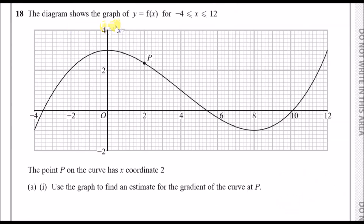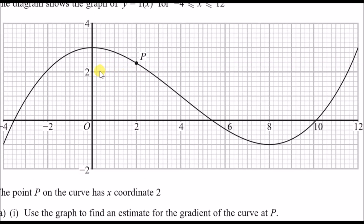The diagram shows the graph of y equals f(x) for x between minus 4 and 12 — this looks like a cubic graph. The point P on the curve has x coordinate 2. Zooming in carefully, the values go up in increments of 0.2, so the y coordinate should be 2.4. The coordinate of P is therefore (2, 2.4).